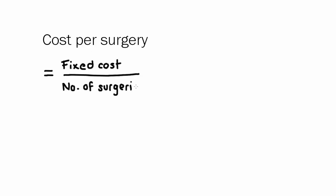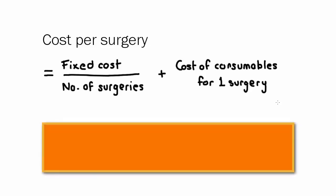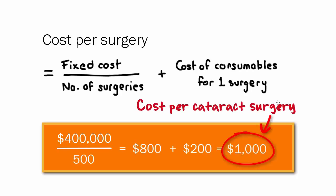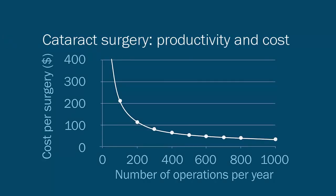Variable cost is the money spent on the consumables used in cataract surgery — materials like sutures, IOLs, eye drops, viscoelastic, and so on. For each surgery carried out, this is a cost that must be accounted for. If no surgery is done then none of this will be purchased, so no cost. The cost per surgery can be calculated with a formula: the fixed cost divided by the number of surgeries, plus the cost of consumables for one surgery.